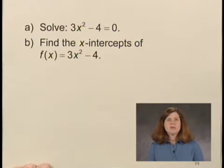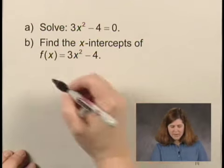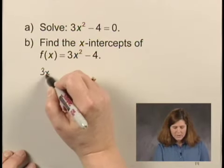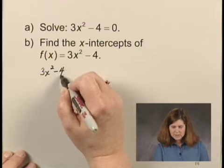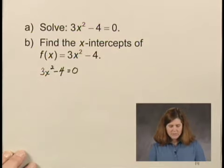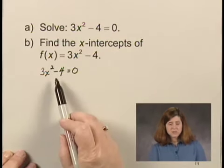Let's start by solving 3x² - 4 = 0. We are going to use principle of square roots because there is no x term.